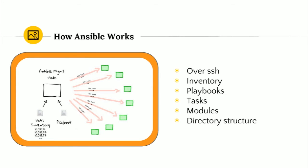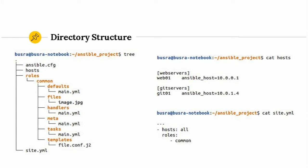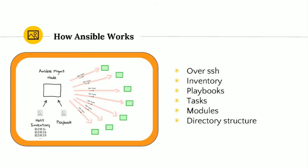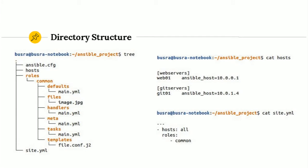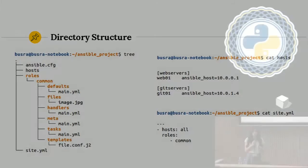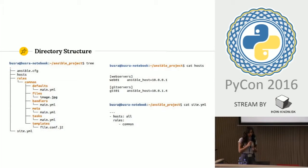Here's an example of an Ansible project. You can see the tree structure. I have my Ansible config file — you can have your own, but by default it's under /etc/Ansible. You have your host file. I can write host groups here, for example my web servers and my git servers with their IPs. The great thing is you can group your servers, because some tasks you want to run only on git servers and some only on web servers.